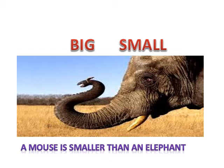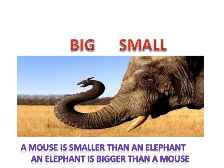Big and small: a mouse is smaller than the elephant. Here it's 'smaller' — it means that I'm comparing between two things or two animals, so I add '-er'. And an elephant is bigger than a mouse.